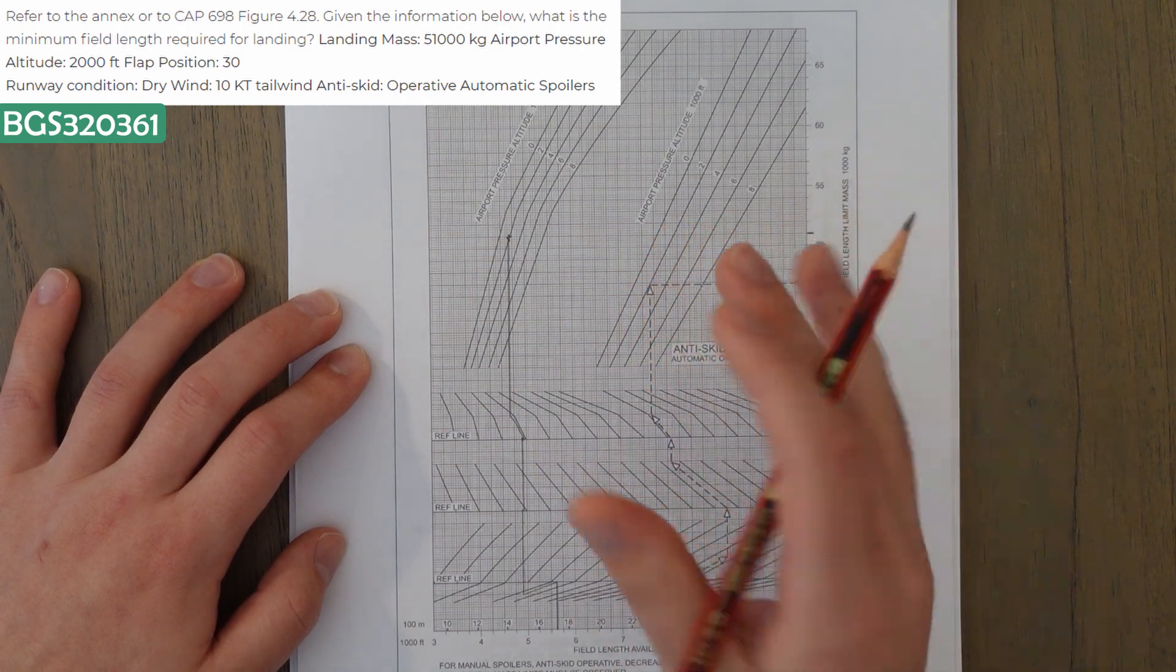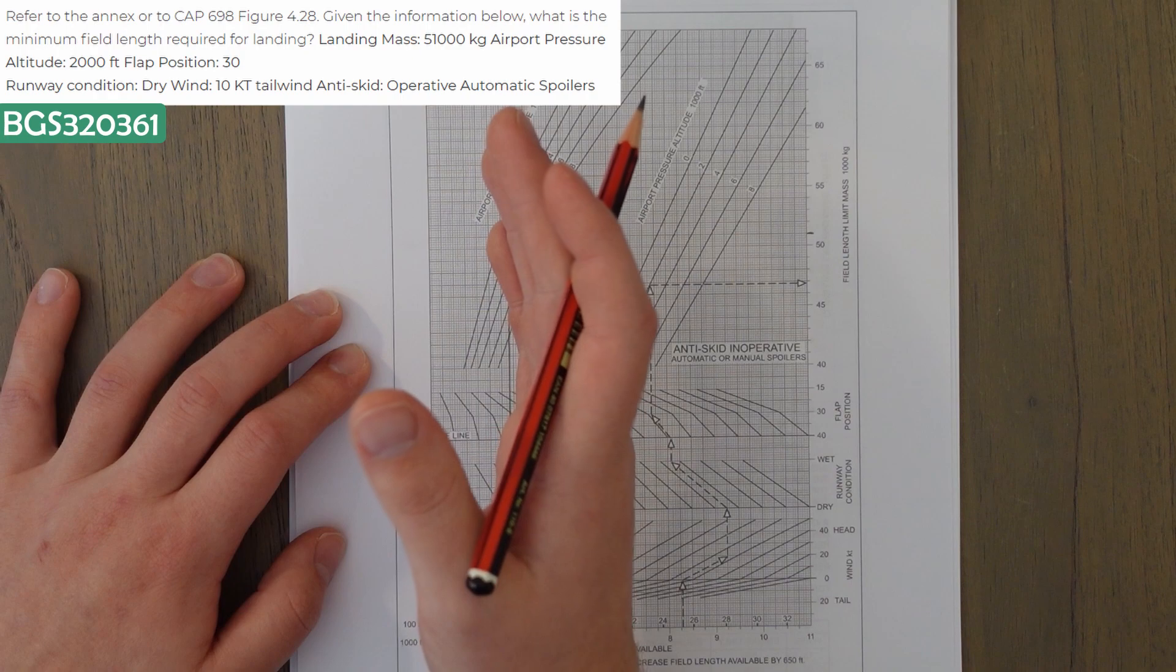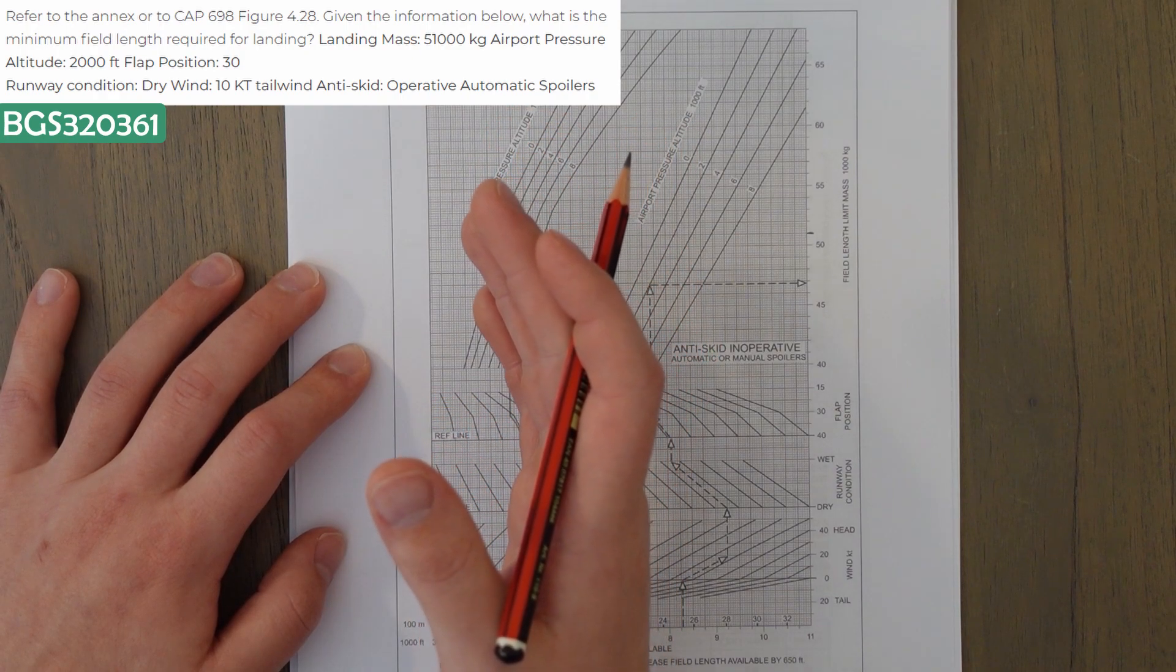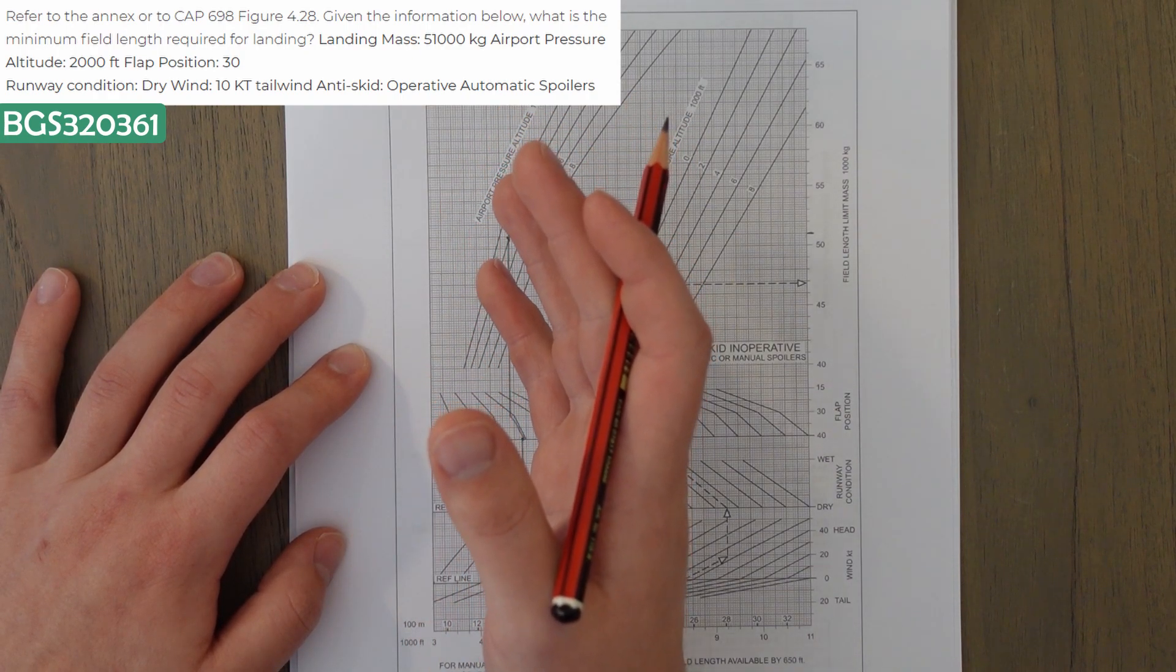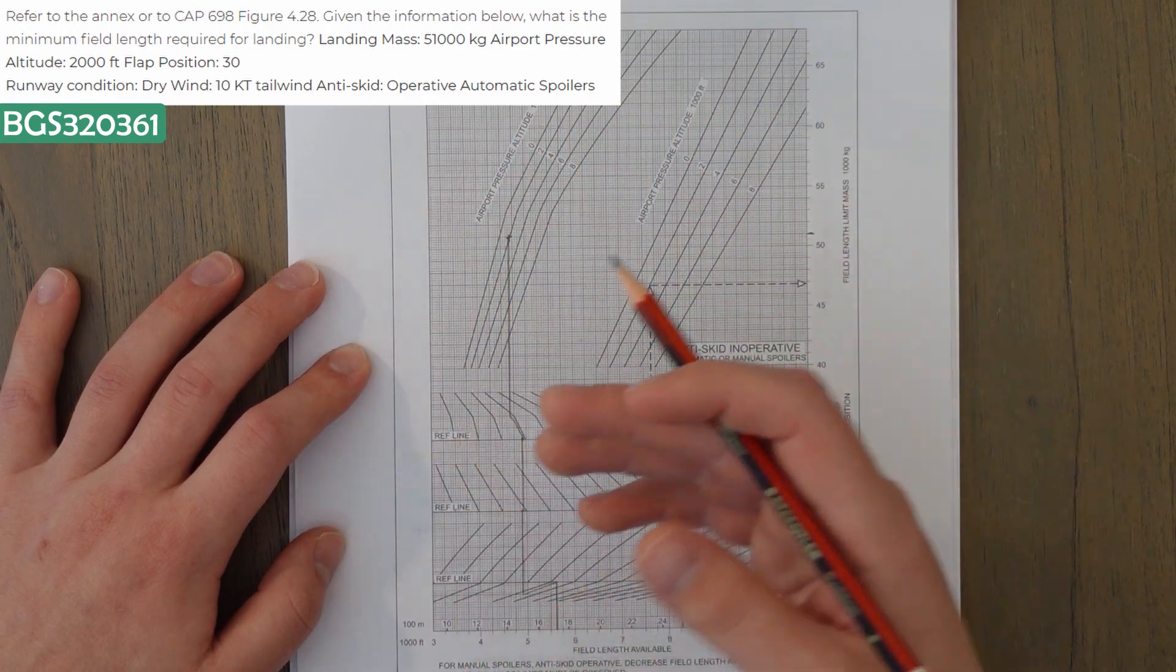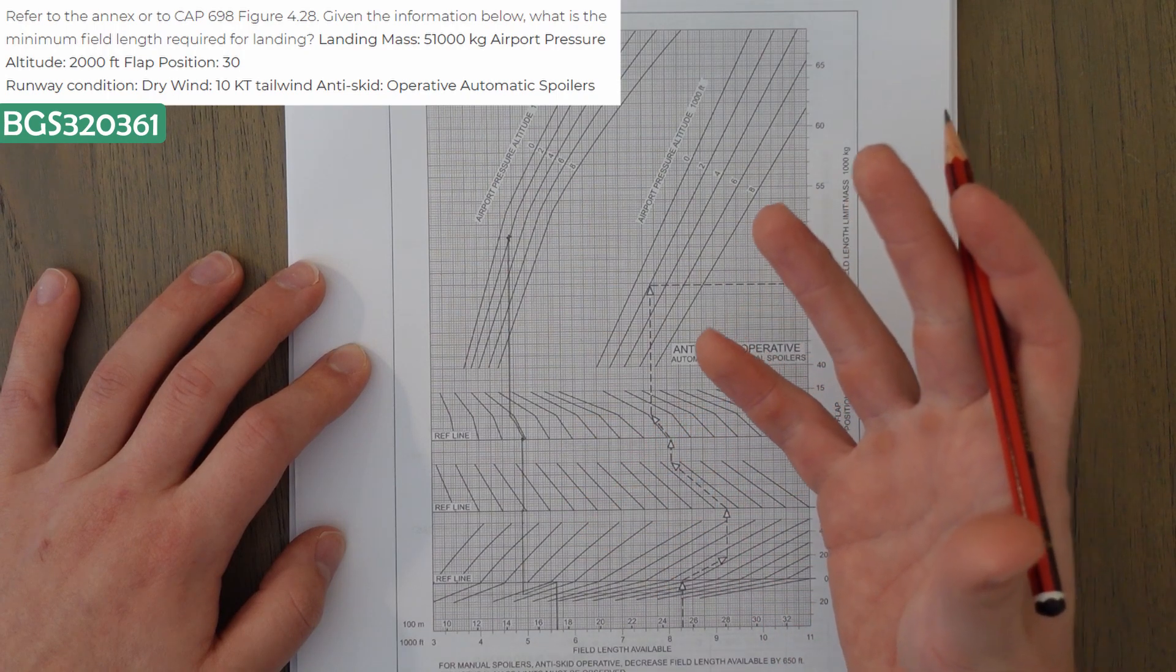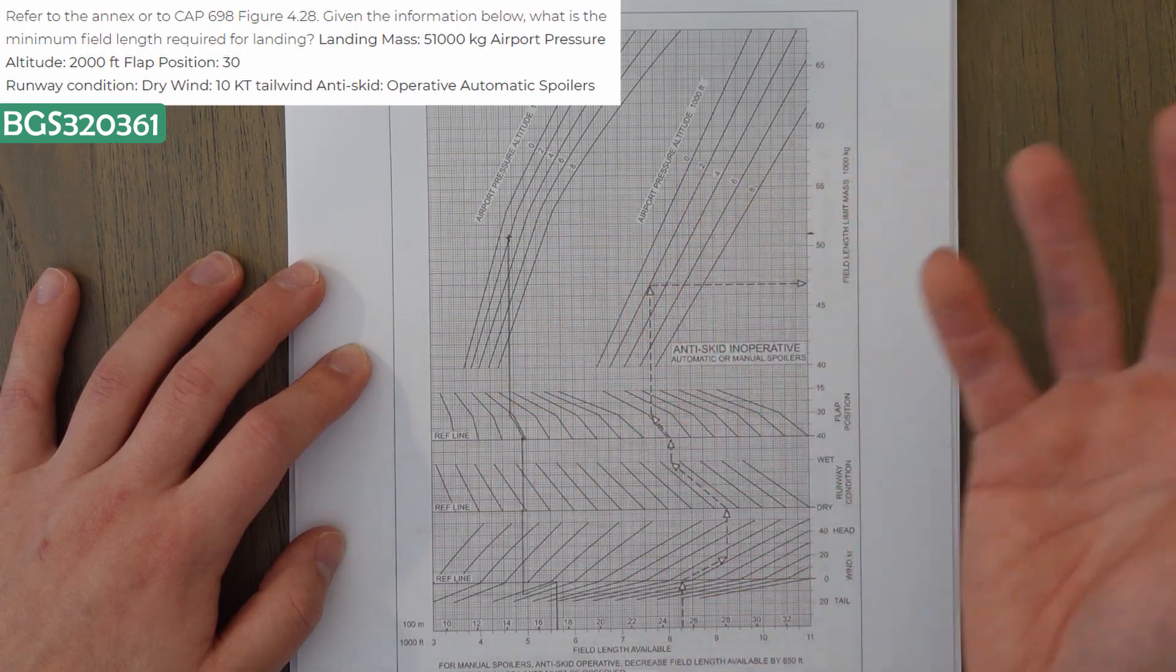So you can do a quick error check with all these sort of things. If the anti-skid's working, it's going to reduce our landing distance. So you can error check what these guidelines are doing, and it's a quick way to figure out how the lines work if you're a bit stuck, for example.